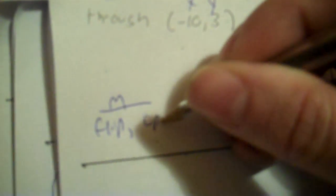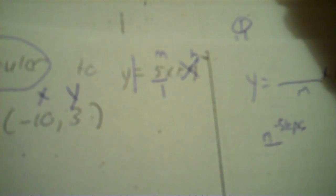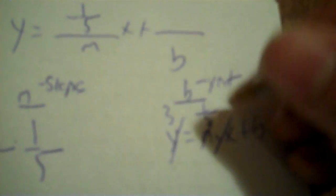Next: perpendicular to y equals 5x plus 4 through (negative 10, 3). Flip 5/1 to 1/5 and since it's positive, make ours negative: m equals negative 1/5. Plug into y = mx + b: 3 = (negative 1/5)(negative 10) + b → 3 = 2 + b → subtract 2 → b = 1. Answer: y equals negative 1/5 x plus 1.